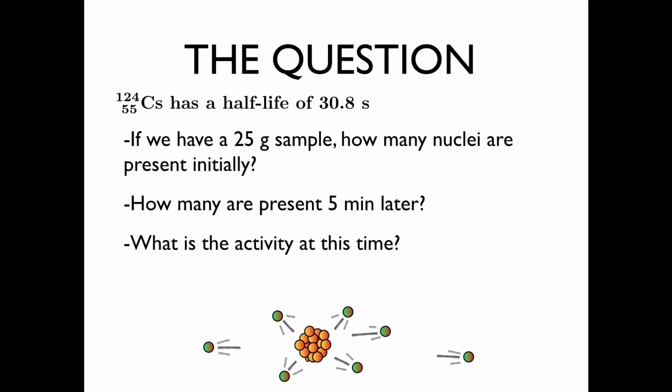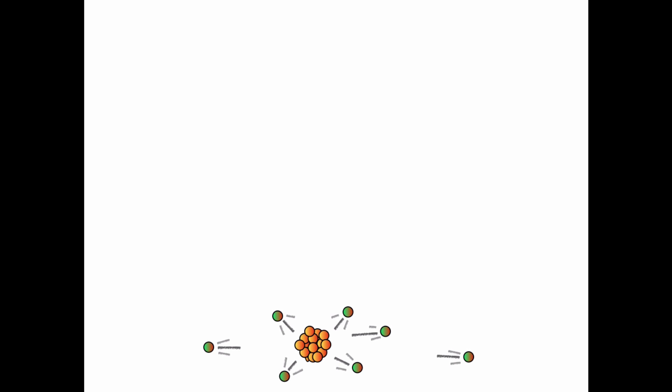And what is the activity at this time? That is, how many decays per second are there at 5 minutes? We'll start by finding the initial number of nuclei.